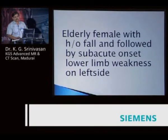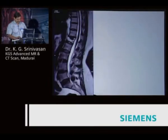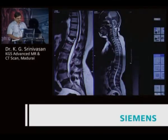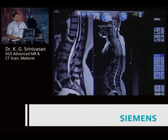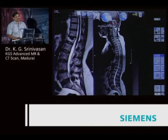Elderly female with history of fall, followed by subacute onset lower limb weakness on the left side. First MRI showing a compression fracture at D12 — but we should not stop there. You can see there is a large parasagittal meningioma, responsible for the left side lower limb weakness. That is very crucial.